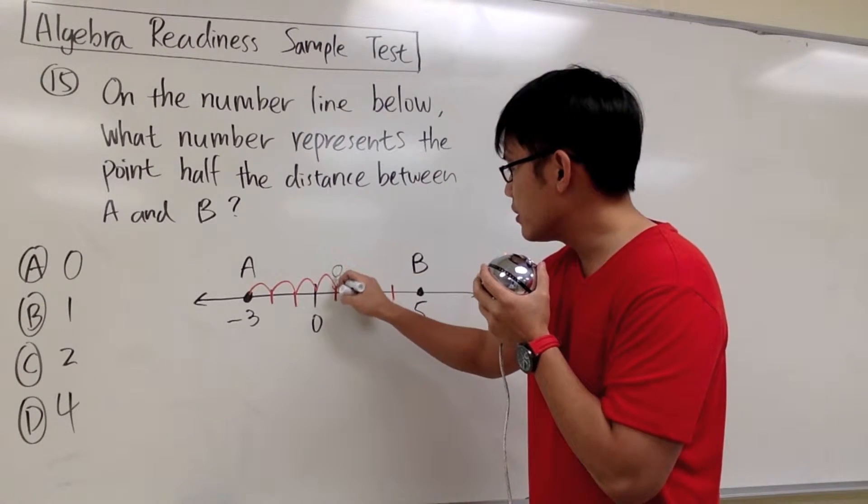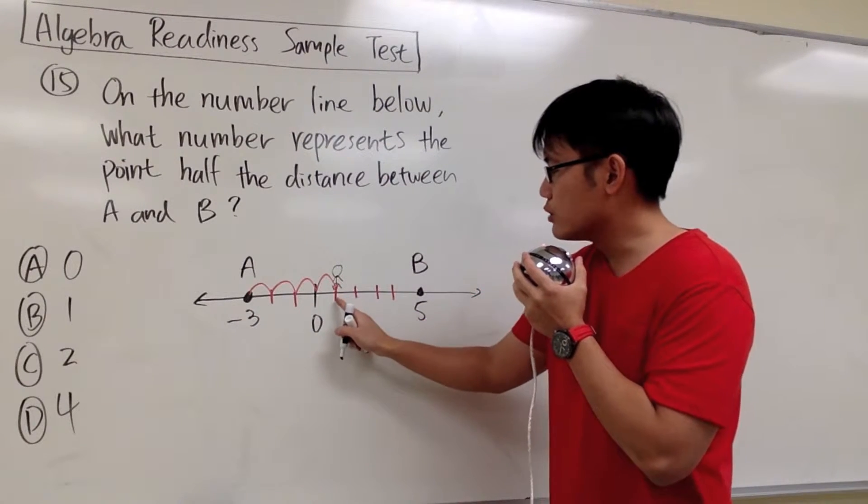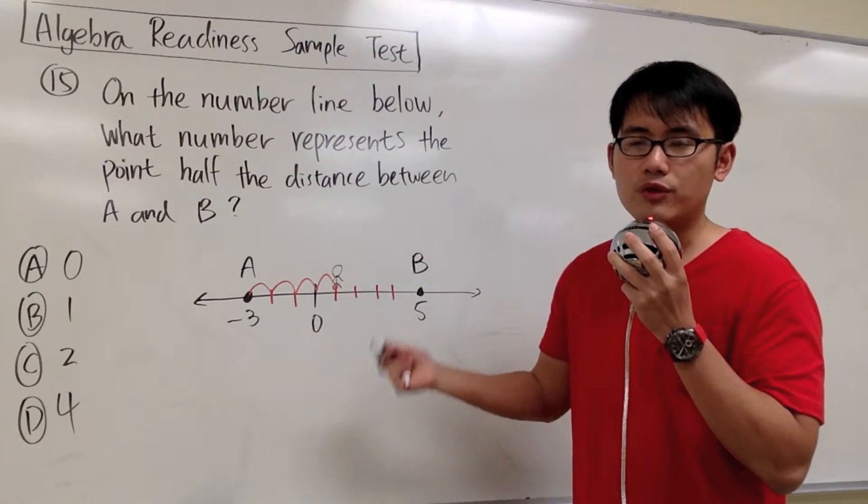If you are right here, as you can see, you are 4 units away from A, and you are also 1, 2, 3, 4—4 units away from B.